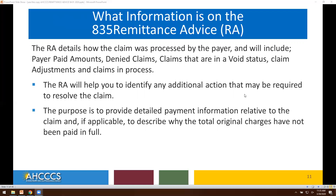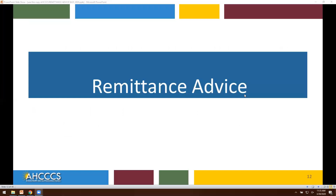What information will you find on your 835 remittance? The remittance advice will detail how the claim was processed by the payer and will include payer paid amounts, denied claims, claims in a void status, claim adjustments, and claims in process. The RA will help you identify any additional action that may be required to resolve a claim. The purpose is to provide detailed payment information and describe why the total original charges have not been paid in full.